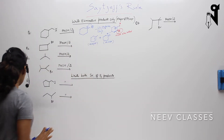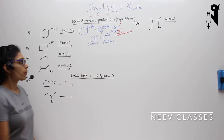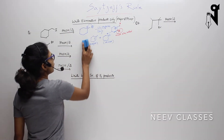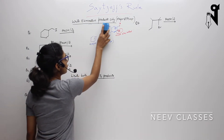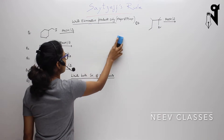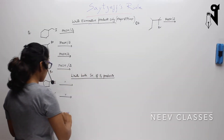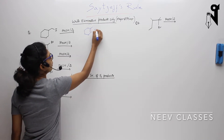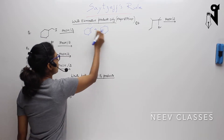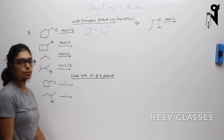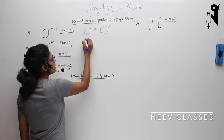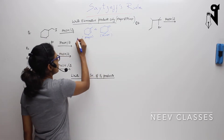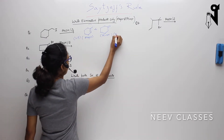I think I have taken space for the second question, so I'll just rewrite the whole answer. This is the major one, this is the minor one — this is the answer for the first one. I'll rub it off and rewrite. So the products are — as I had already mentioned in the question, we need only elimination products. This is major and this is minor. This is the Zaitsev product and this is the Hofmann product.